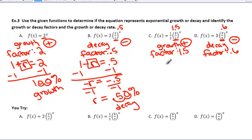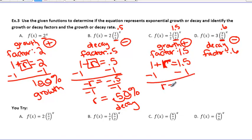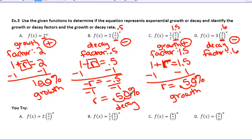Let's look at c. We're going to be talking about growth, so we have 1 + r = 1.5. We subtract 1 from both sides and get r = 0.5. We move the decimal point over two places and get 50%, and we identify this as 50% growth. Even though between b and c we have the same percentages, they mean two completely different things — and that's why identifying the decay and growth is so important.